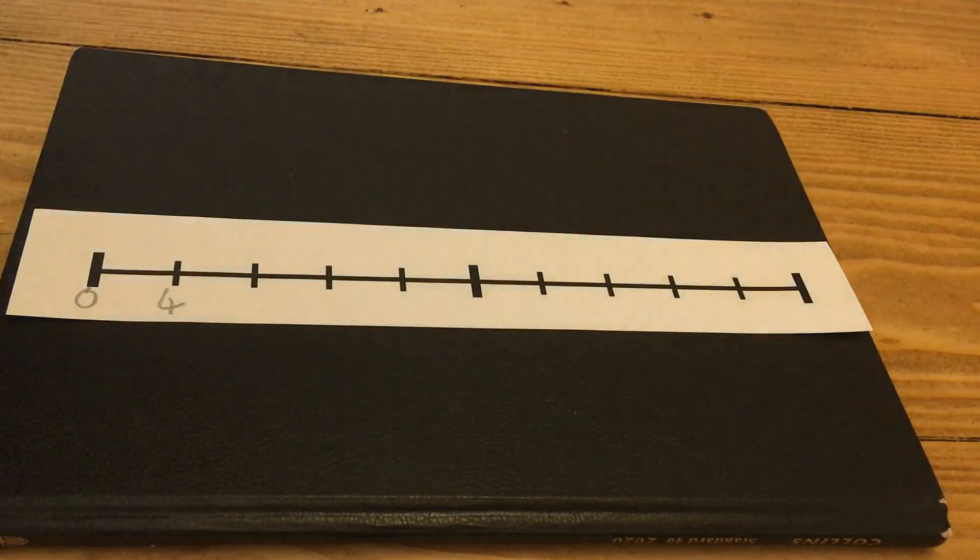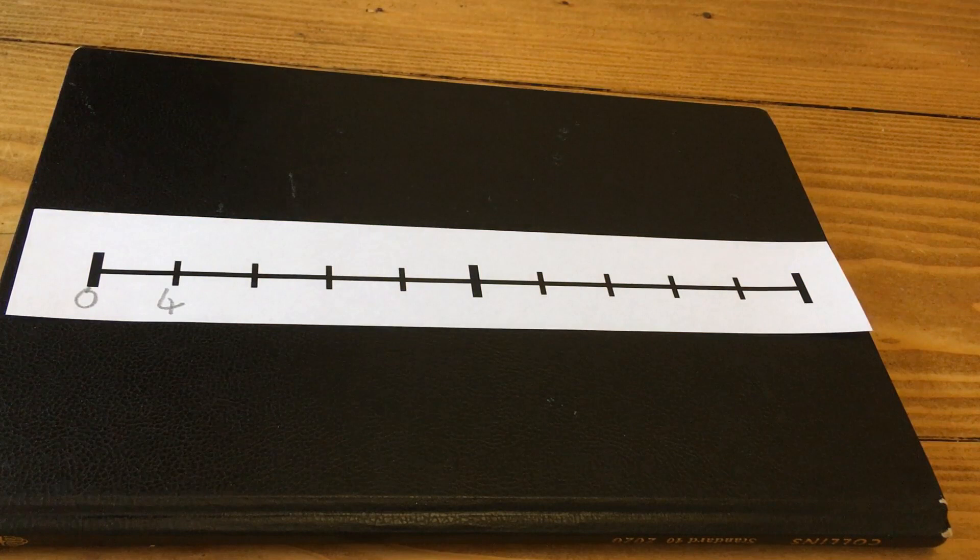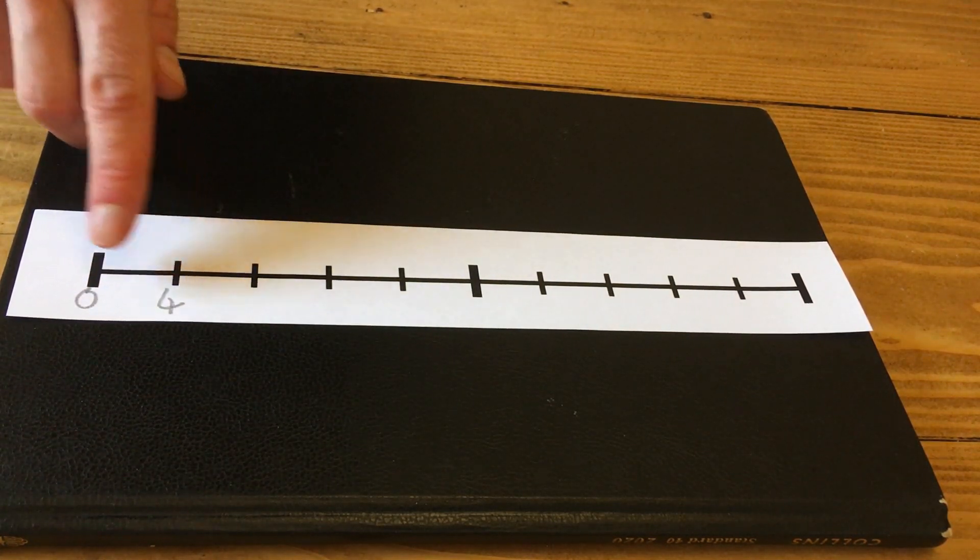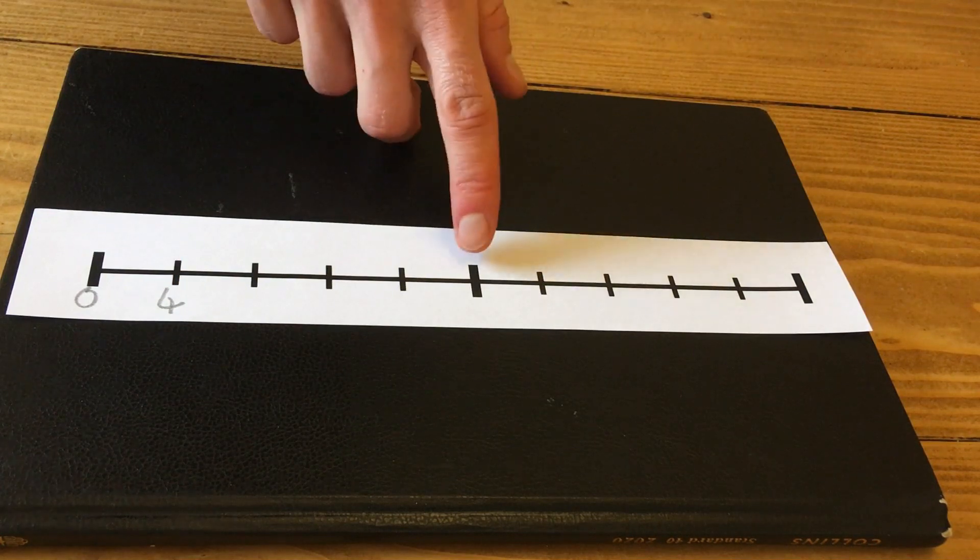So here's a little game that you can play to help children learn times table facts and see relationships between times table facts. I've written on a zero and a four there. There's ten spaces and there's a thicker one in the middle.